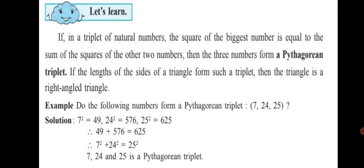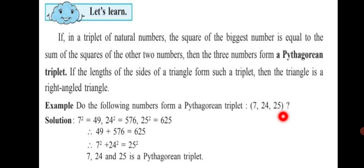For example, do the following numbers form a Pythagorean triplet? 7, 24, 25. These three numbers are natural numbers. The biggest number is 25. If its square is equal to the sum of the squares of the other two numbers — 7 and 24 — then these three numbers are said to be a Pythagorean triplet.